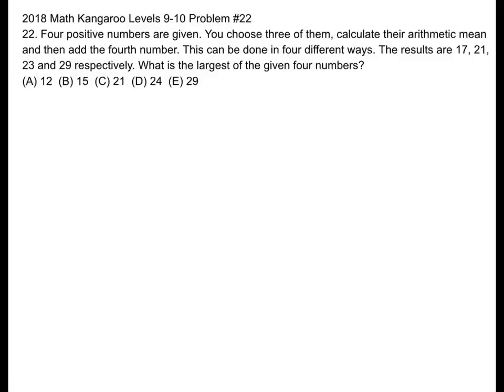The results are 17, 21, 23, and 29 respectively. What is the largest of the given four numbers? A, 12, B, 15, C, 21, D, 24, or E, 29.